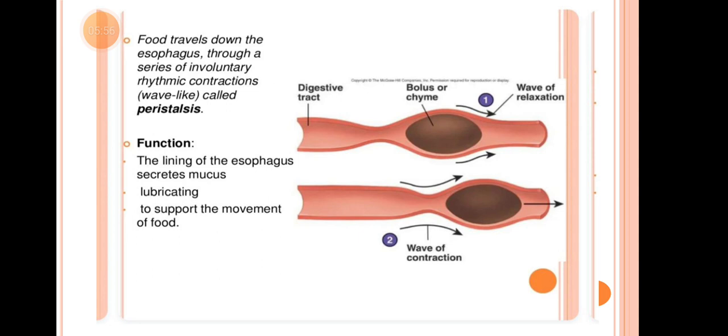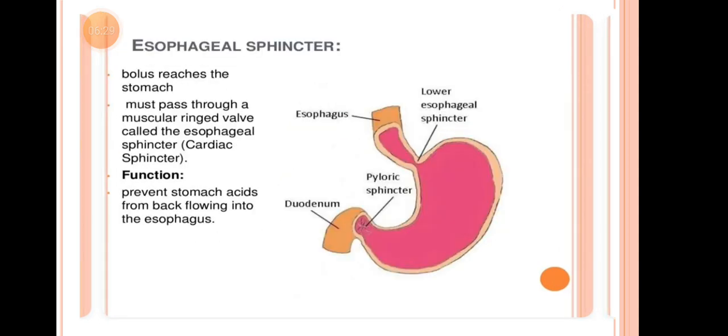The lining of the esophagus secretes mucus, which lubricates the food to support its movement forward. If the esophagus lining were rough or dry, food would have difficulty proceeding. The smooth muscle lining secretes mucus so that food can move forward easily.